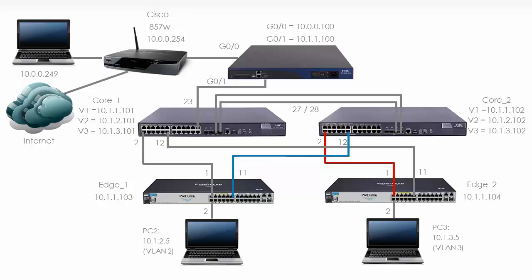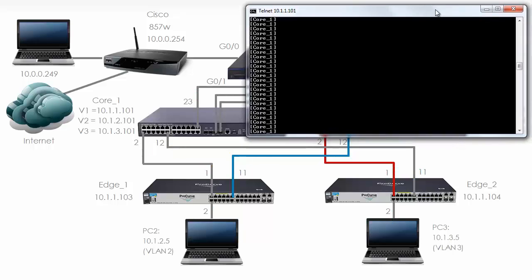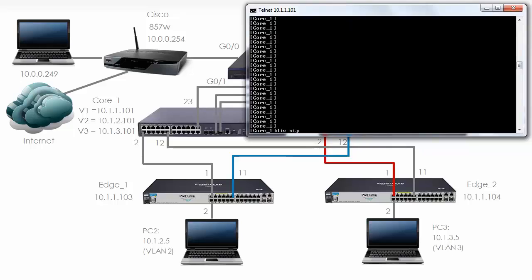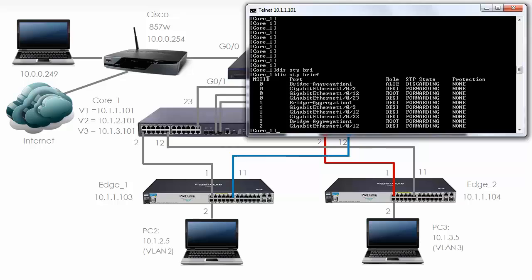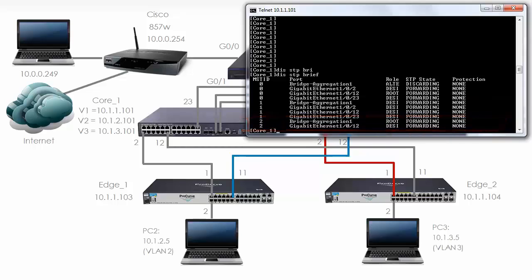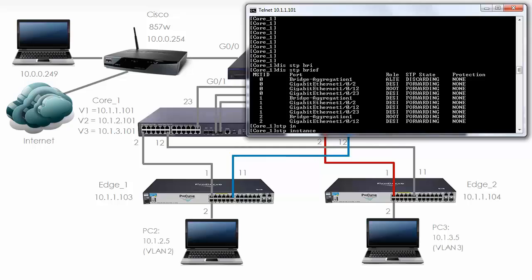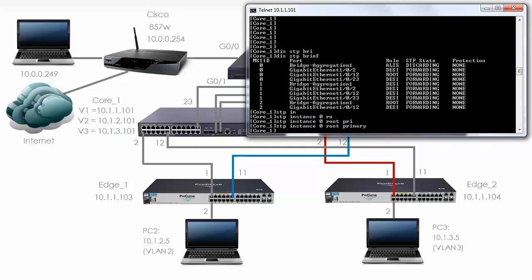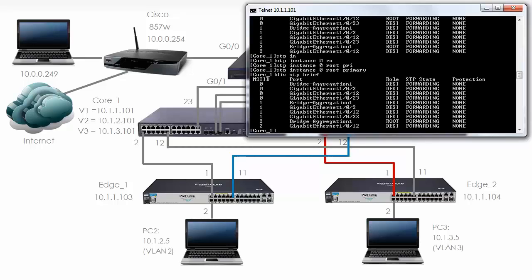Let's complete the diagram showing the forwarding and blocking ports with the configuration now completed. Previously spanning tree was blocking the 20 gig link. Let's look at Core 1 'display stp brief'. Notice Bridge Aggregation 1 is still discarding — but that's on Instance 0. It's forwarding on Instance 1 and forwarding on Instance 2. Let's change the priority for Instance 0: 'stp instance 0 root primary'. It's important to remember that you still need to configure spanning tree for Instance 0. Now the port is forwarding.